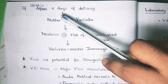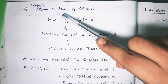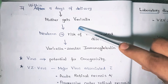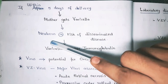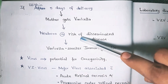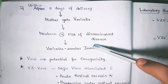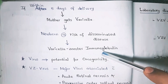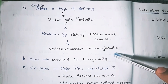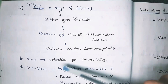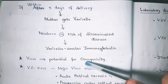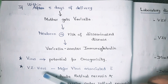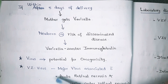If the mother acquires chickenpox within five days of delivery, the newborn is at the highest risk of getting disseminated disease. To prevent this, varicella zoster immunoglobulin is given to the baby. The virus also has the potential for oncogenicity — the potential to develop cancers.